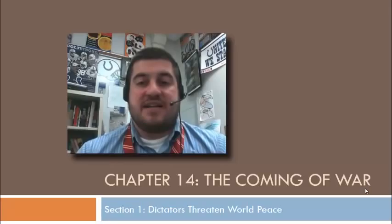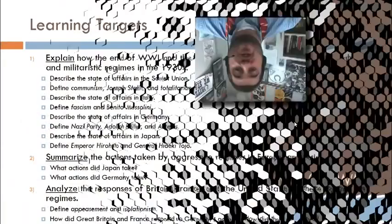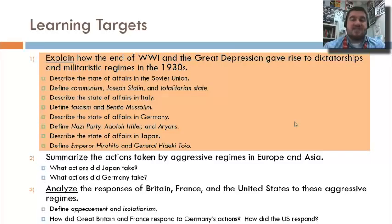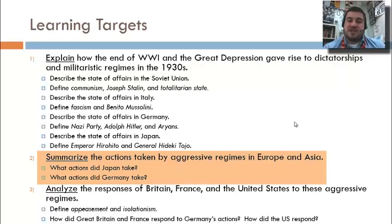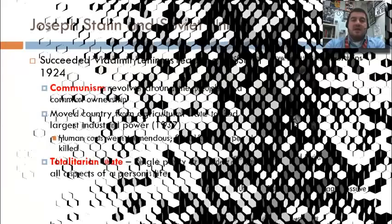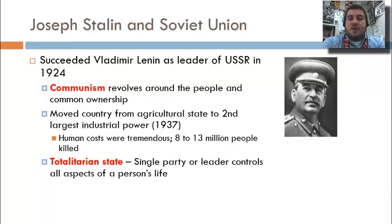Hi and welcome back to U.S. History with Mr. Snyder. Today we are beginning the build-up through the 1930s to World War II. We have quite a few learning sub-targets: we're going to explain how the end of World War I and the Great Depression give rise to dictatorships and militaristic regimes in Europe and Asia in the 1930s, summarize the actions taken by those aggressive regimes, and analyze the responses of Britain, France, and the United States to those aggressive regimes.